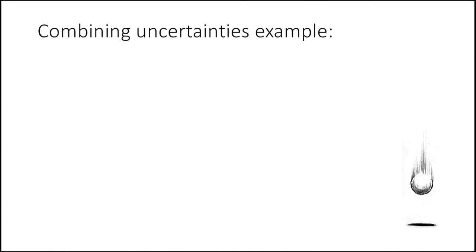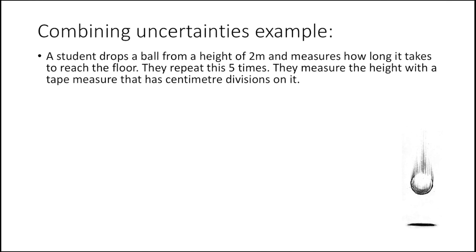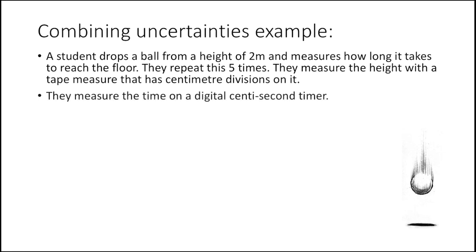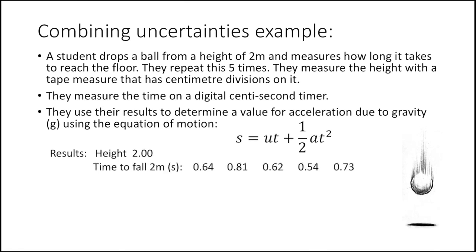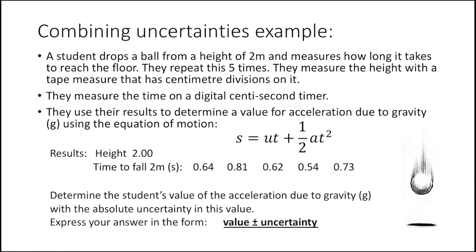Let's use the example of finding acceleration due to gravity by dropping a ball. A student drops a ball from a height of 2 metres and measures how long it takes to reach the floor, repeating this five times. The height is measured with a tape measure with centimetre divisions, and time is measured on a digital centisecond timer — a timer that reads to the nearest hundredth of a second. We'll use s = ut + ½at² to determine g with its absolute uncertainty.